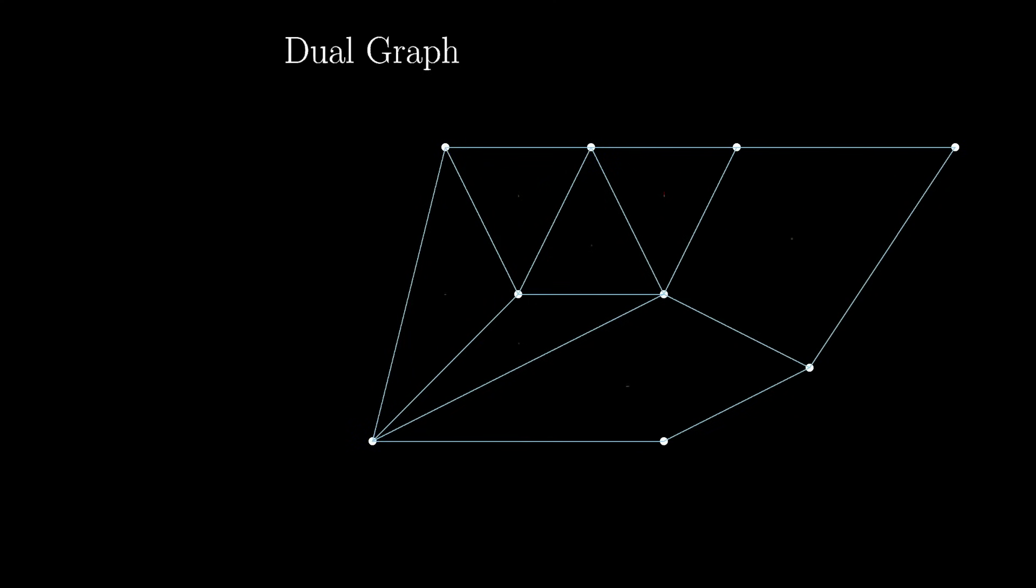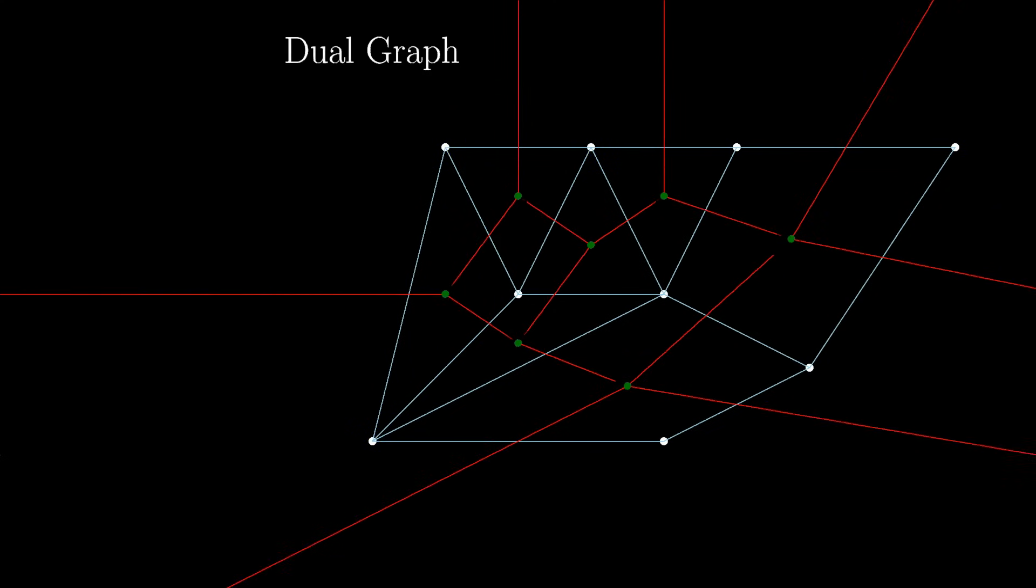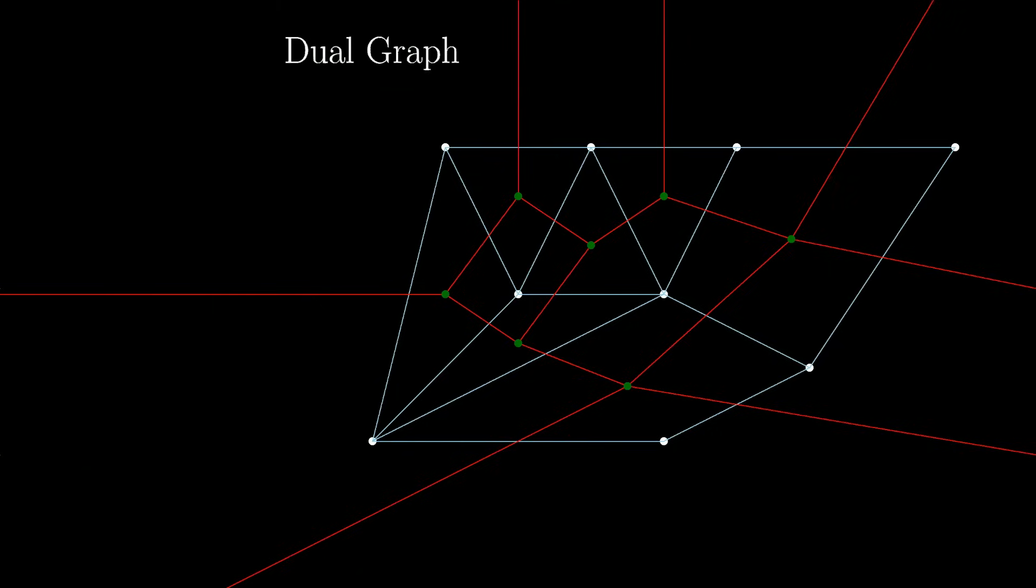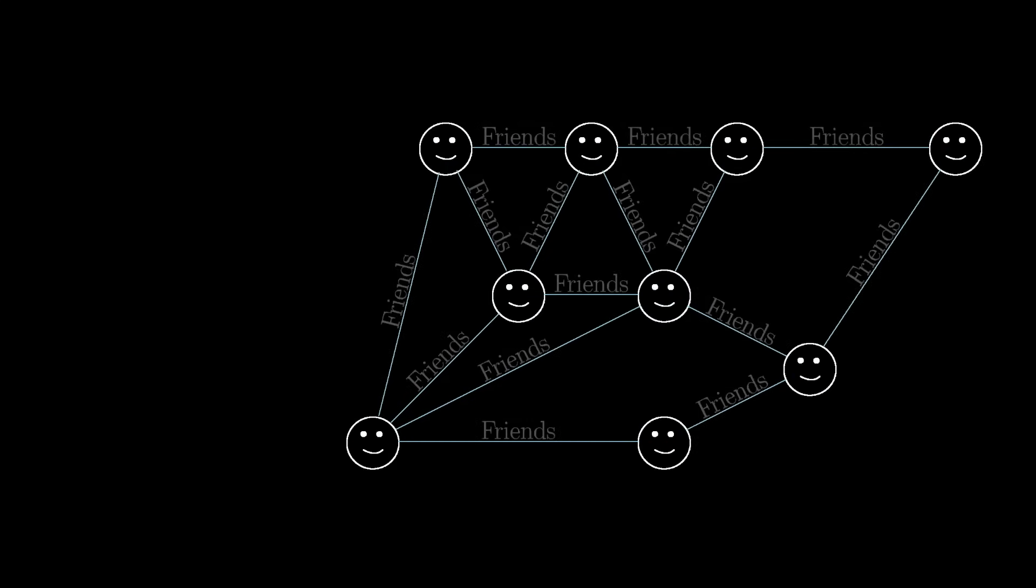Before defining the dual graph, which runs the risk of being confusing, it's important to remember why people actually care about graphs in the first place. I was actually lying earlier when I said a graph is a set of dots and lines. Really, it's a set of anything, with any notion of connection, but we typically represent those things with dots and those connections with lines.